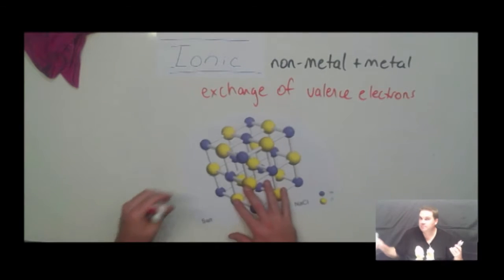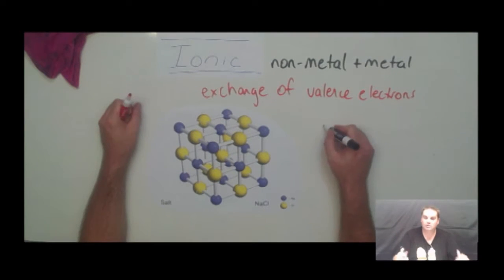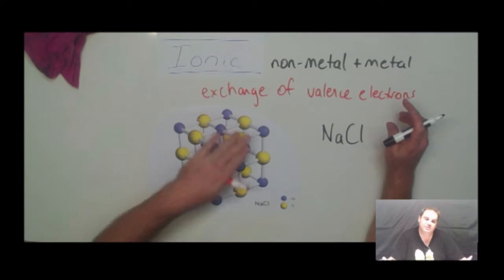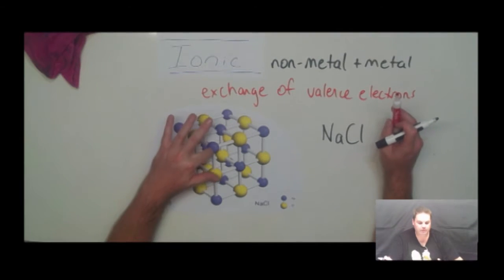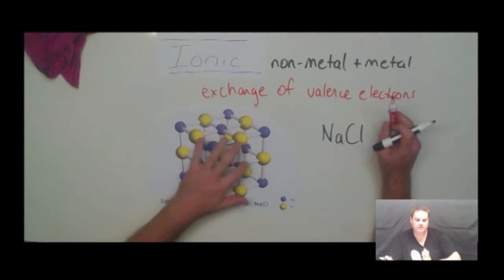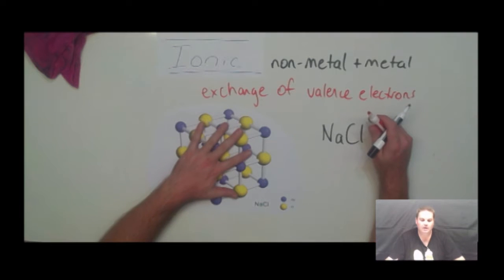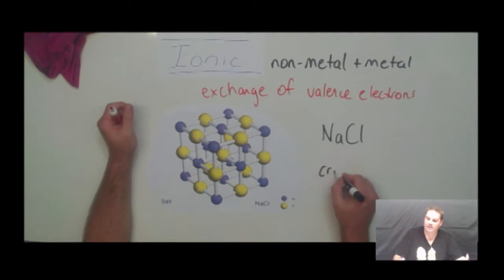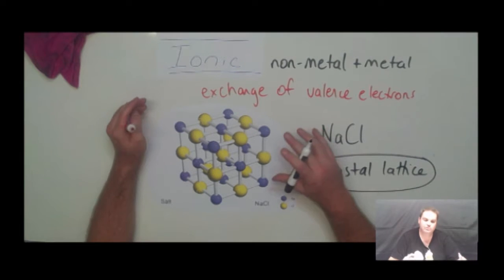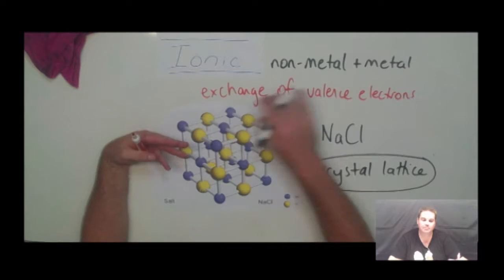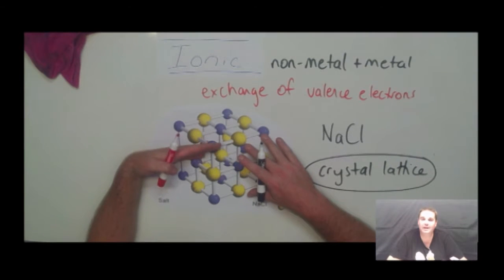This exchange of electrons keeps happening over and over, so we get a really, really big three-dimensional structure. This is an example of salt — sodium chloride — written as NaCl. As you can see in the diagram, we've got a big three-dimensional cube where every sodium has one chlorine, giving a one-to-one ratio. We call this a crystal lattice. It has lots of really strong ionic bonds, requiring a lot of energy to break them apart, so it has a high melting point.